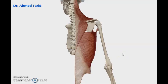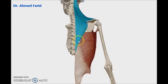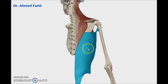Welcome dear students. In this video we will discuss the attachments and actions of muscles of the back. First of all we have to be oriented by the muscles we will talk about. I have two layers for the muscles of the back. The superficial layer is formed of two muscles: the first one is called trapezius and the second one is called latissimus dorsi.